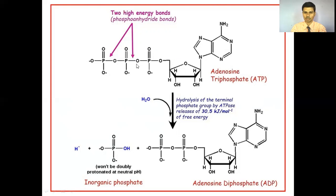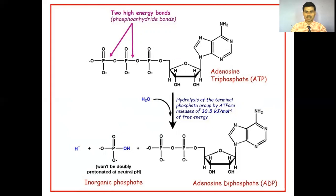After the hydrolysis, ATP is converted into ADP, adenosine diphosphate, meaning presence of only two phosphate groups. Again we can do the hydrolysis of this ADP and ADP converts into adenosine monophosphate. That means all three phosphate groups are highly energetic, which are present in the ATP.